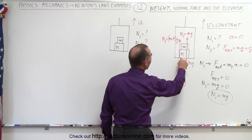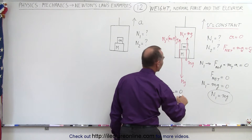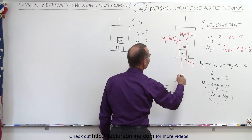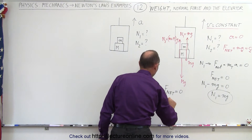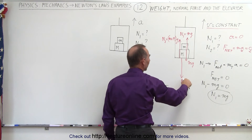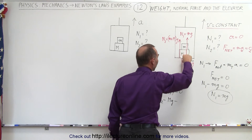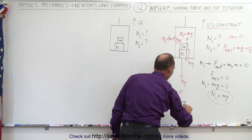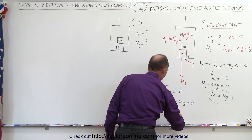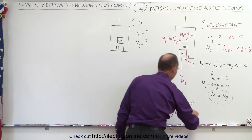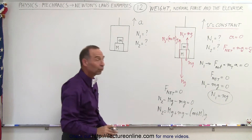Now if we're going to find the normal force n2, we can say that f_net again equals zero, just like before, because there's no acceleration. The net force is n2 pushing up minus the weight of the large block, big Mg, minus the weight of the little block, little mg, and that equals zero. So n2 must equal big Mg plus little mg, or written together, m plus big M times g — exactly what we got on the diagram.